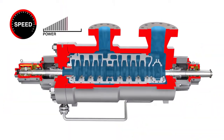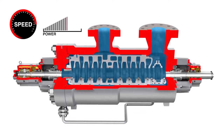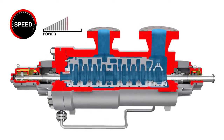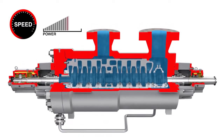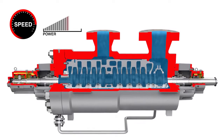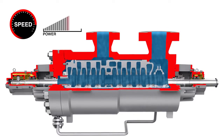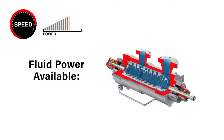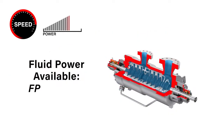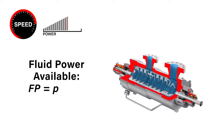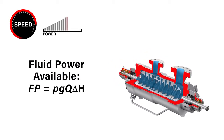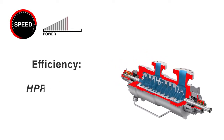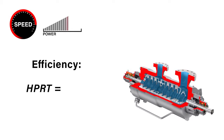To calculate an HPRT's power recovery for a single phase liquid with no evolved gas, we can use a calculation based solely on the inlet capacity and turbine pressure drop. That is, fluid power available is the product of mass flow, head drop, and gravity. HPRT efficiency is calculated using actual tested power output divided by the calculated fluid power available.